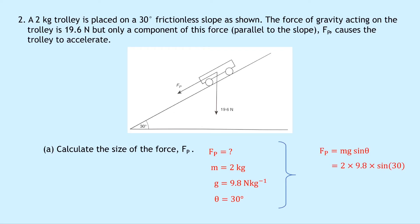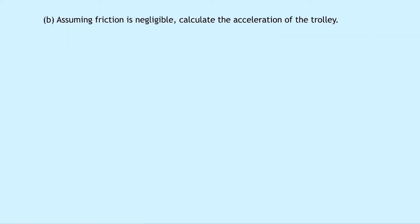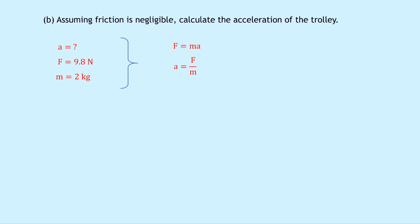Substituting in the numbers: 2 × 9.8 × sin(30°) gives an answer of 9.8 newtons. We could have done this more quickly because the question gave us the weight of 19.6 newtons, which is mg, so we could have gone straight to Fp = 19.6 × sin(30°). Part b says, assuming friction is negligible, calculate the acceleration of the trolley. The force parallel to the slope is 9.8 N and mass is 2 kg.